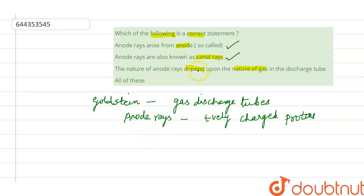This is also correct. The third one, the nature of anode rays depend upon the nature of gas in the discharge tube. This is also correct because it does depend upon the nature of gas. So all of these are correct statements.